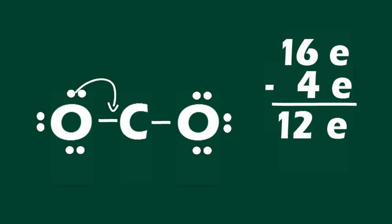Move a pair of electrons from each of the oxygen atoms. Draw an additional bond between the carbon atom and each of the oxygen atoms to form double bonds. This structure now satisfies the octet rule for carbon and each oxygen.